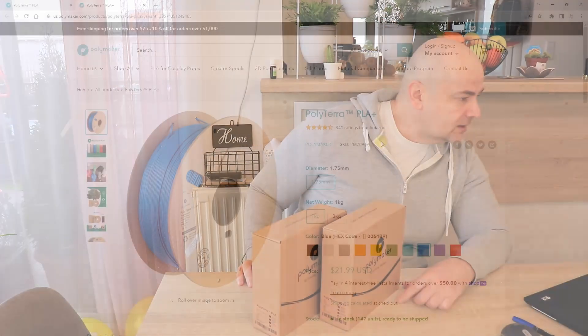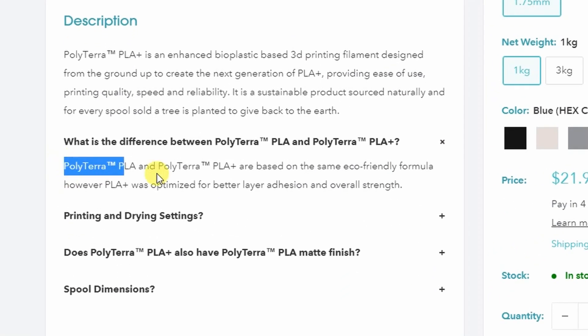According to the specifications on the website, they both have an eco-friendly formula. However, PLA Plus has optimized for better layer adhesion and overall strength. According to this, the PLA is good for figures with a lot of supports because the supports will be easier to remove. But if you need mechanical parts which will be used only at room temperature, I will choose PLA Plus. But let's see first what's in the box, do the testing, and then I will do another conclusion at the end.